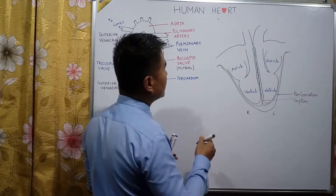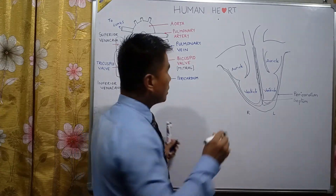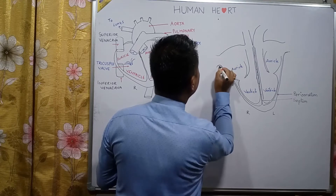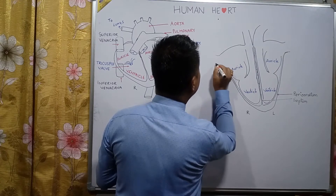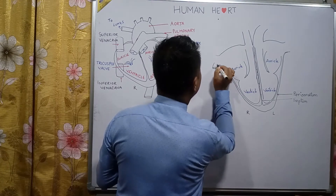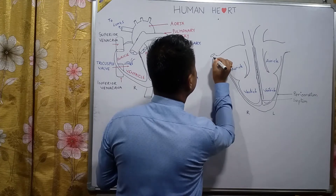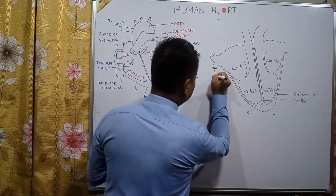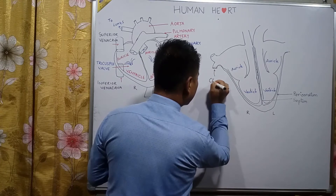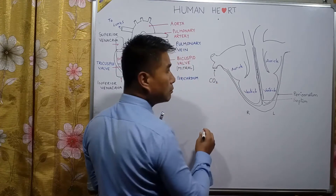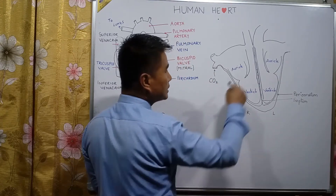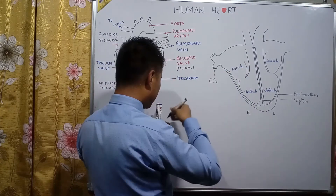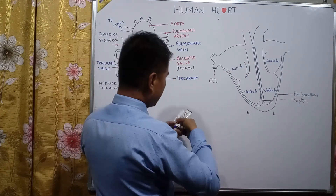The carbon dioxide-containing blood enters the right auricle through a blood vessel which is known as Vena Cava.